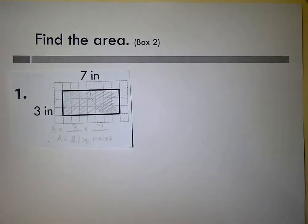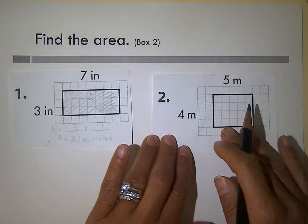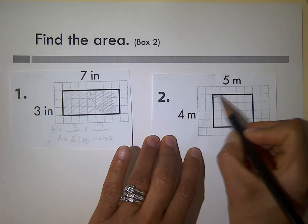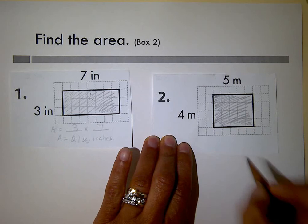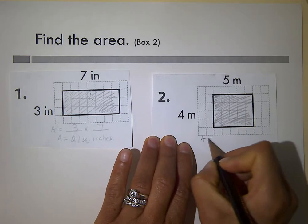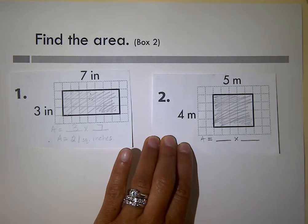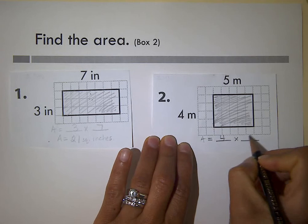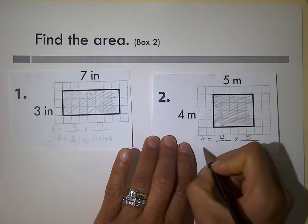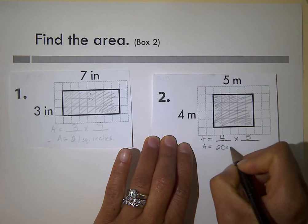What is the area of the inside of this figure? Area equals the length times the width. Plugging in my numbers: four times five. Four meters times five meters means the area is equal to 20 square meters.